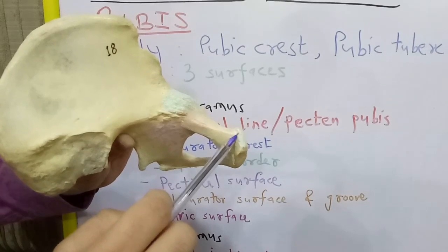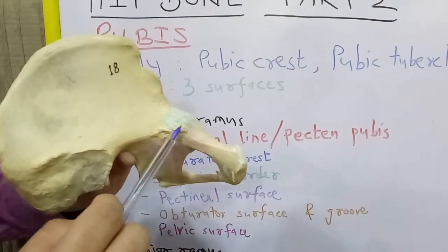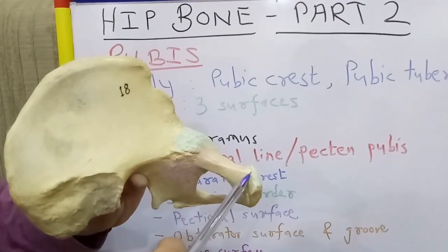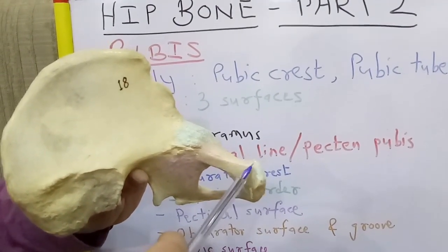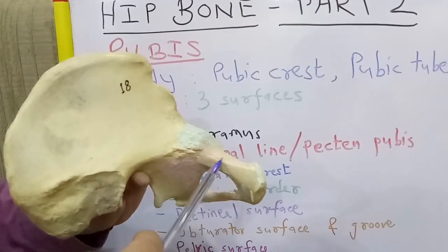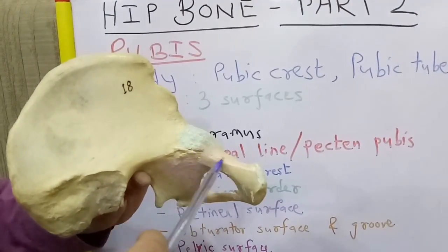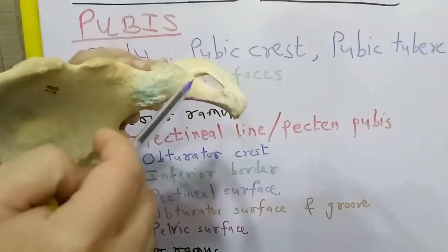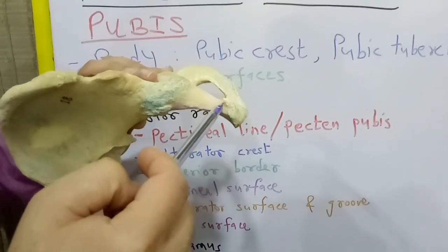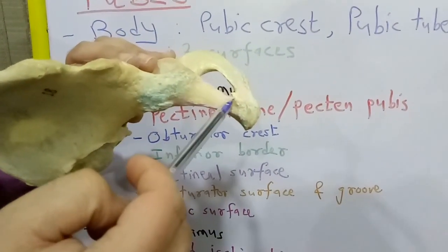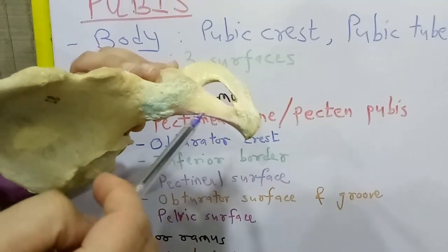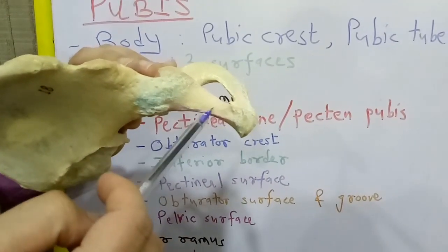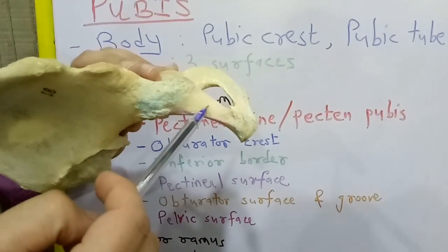Also, the pectineus muscle arises from the pectineal line, and the fascia covering pectineus is also attached to the pectineal line. The pectineal surface, which is the triangular superior surface of the superior ramus, gives origin to the pectineus muscle.